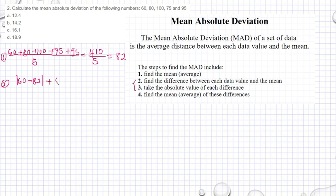Plus absolute value of 80 minus 82, plus absolute value of 100 minus 82, plus absolute value of 75 minus 82, plus absolute value of 95 minus 82, divided by 5.